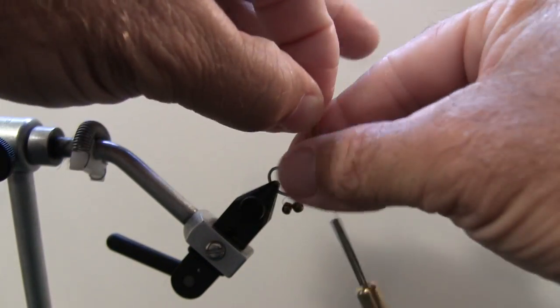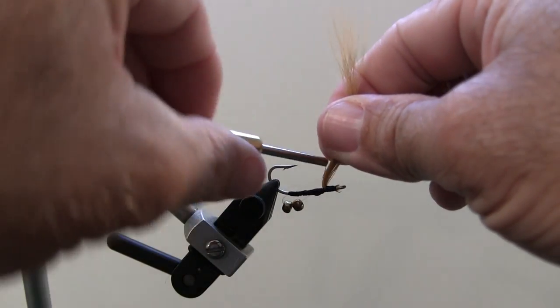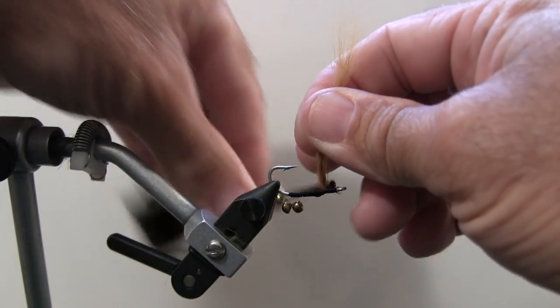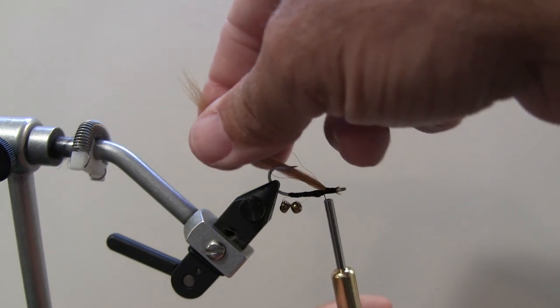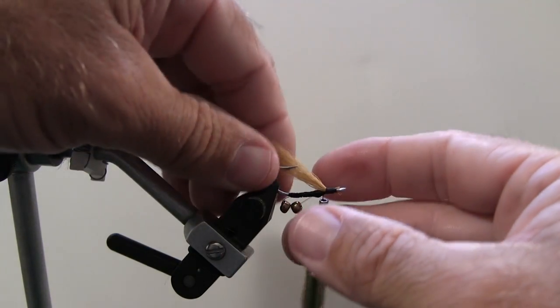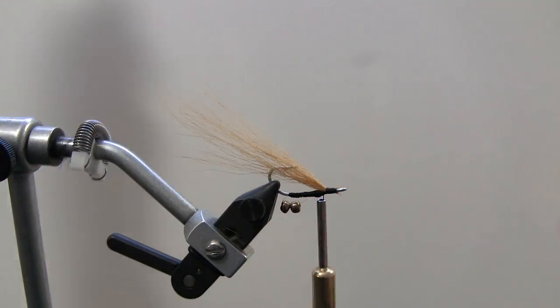I'm going to lift up the wing, come under here a couple times. This will help make sure that it doesn't lay down flat and it will keep that thing right up here above and even with the hook point.